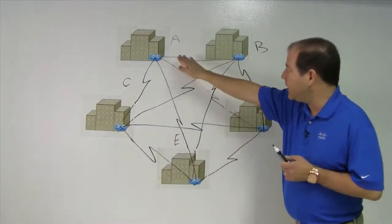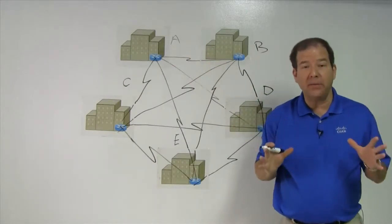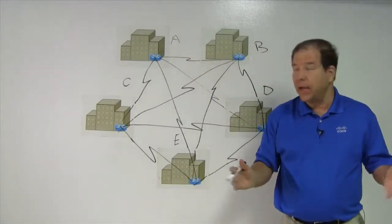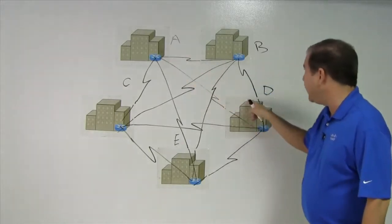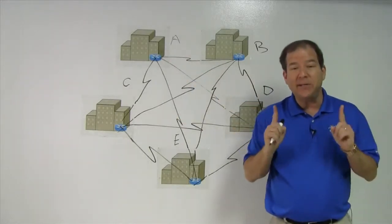If I wanted to communicate from A to B, I have an optimal path to do that. I've got a direct link. If I want to go from A to D, or from B to C, I've got a direct link between any two sites.